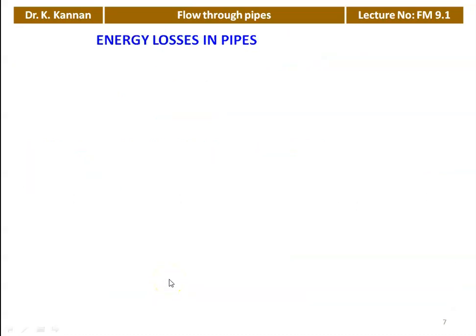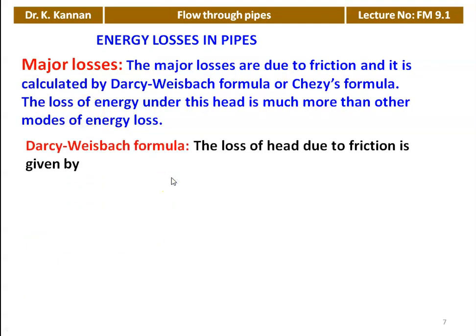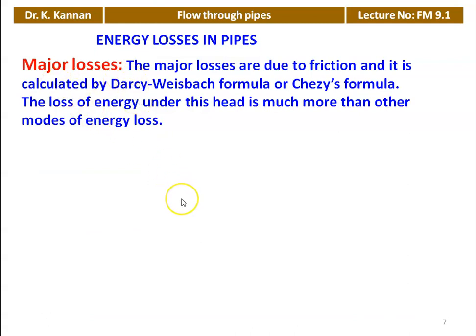Next, we calculate the energy losses in the pipeline. There are two types: major losses and minor losses. Major losses are due to friction and are calculated by the Darcy-Weisbach formula or the Chezy formula. The loss of energy due to friction is much more than other modes of energy loss in the pipeline. Minor losses are sometimes neglected; frictional losses are the major losses in flow through the pipeline, calculated by two equations: Darcy-Weisbach (very popular) and the Chezy formula.